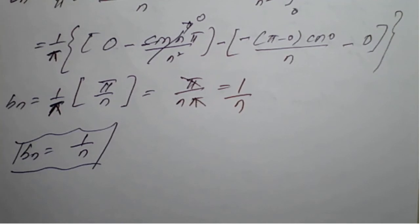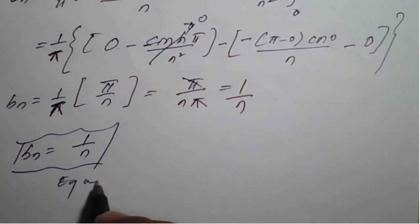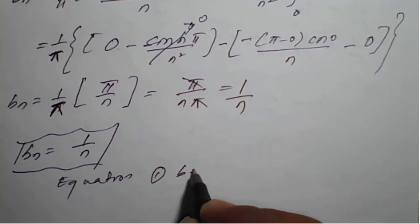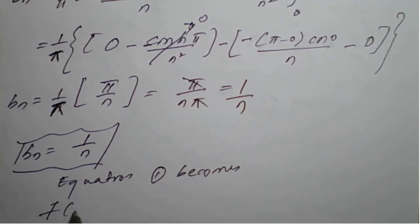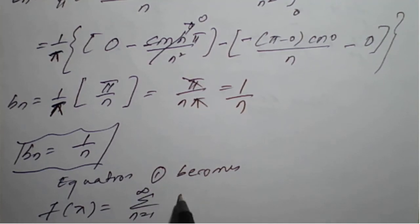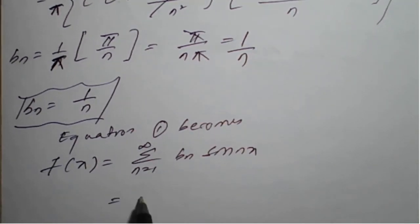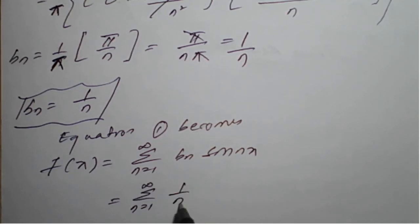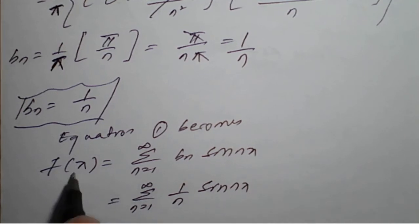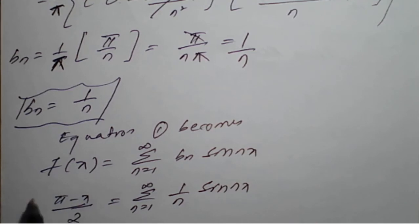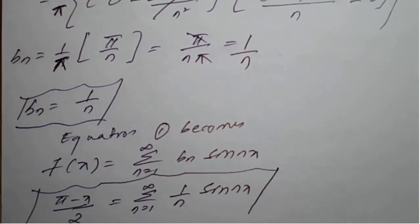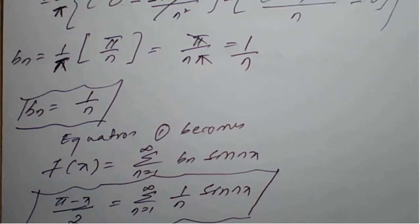Substituting bₙ = 1/n into equation 1, the Fourier series becomes f(x) = Σ(n=1 to ∞) (1/n) sin(nx). So the Fourier series of f(x) = (π - x)/2 is f(x) = Σ(n=1 to ∞) sin(nx)/n.